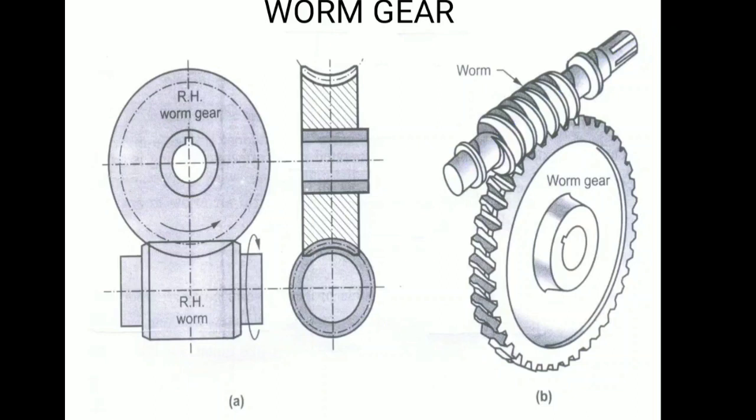First of all, I will tell you the structure of the worm. As like previous gears like spur, helical, both pinion and gear are circular. Now, right now, these are not circular. You can see, this will be the gear portion and this will be the worm portion. In case of the worm, it is circular and worm is like a screw.